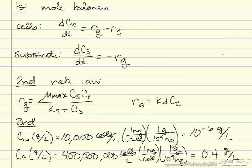Now we can plug in these mole balances for the cells and substrates, the rate laws for growth and death, and the initial concentrations for cells and substrate, then vary the time to figure out how long it takes to get to 0.4 grams per liter of cells.